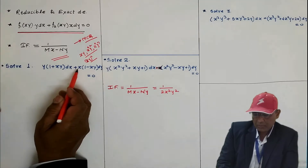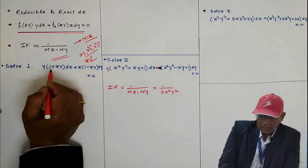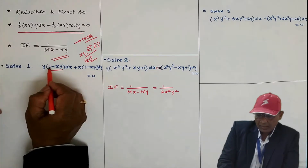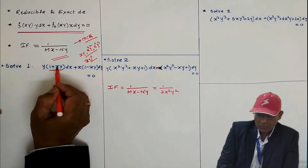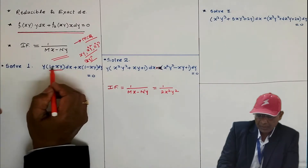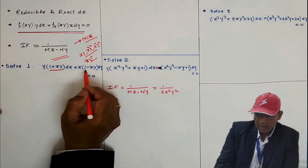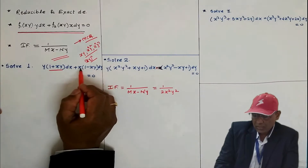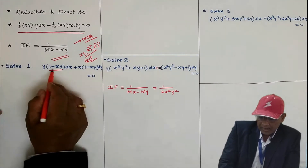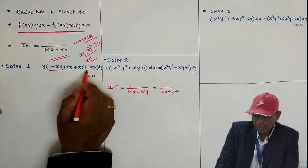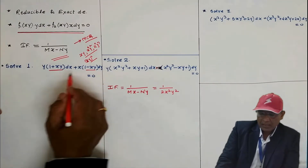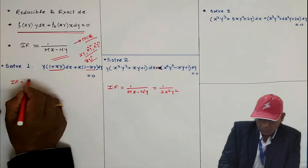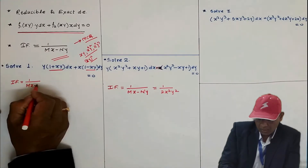Now let's look at the first problem. The differential equation given is: y(1 + xy)dx + x(1 − xy)dy = 0. The bracket (1 + xy) is a function of xy — 1 is (xy)^0 and xy is a function of xy. Similarly the second bracket (1 − xy) is a function of xy. So this equation is of the required type f1(xy)·y·dx + f2(xy)·x·dy = 0, and the integrating factor is 1/(mx − ny).